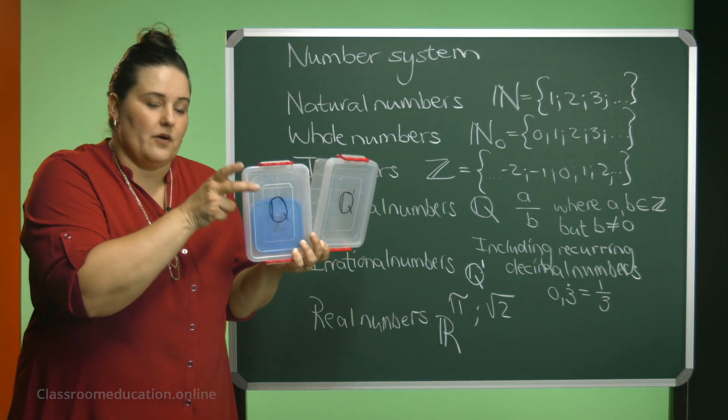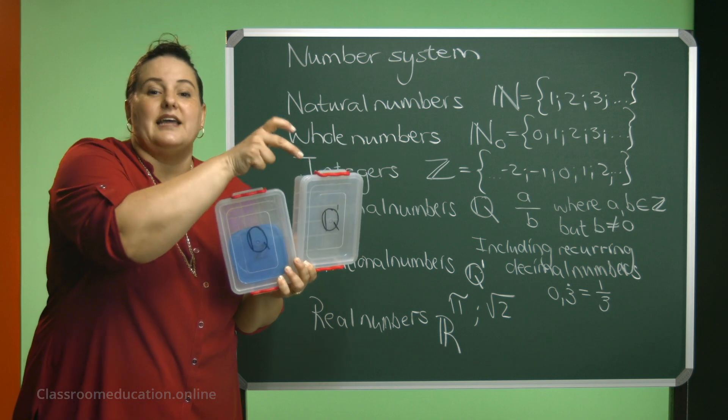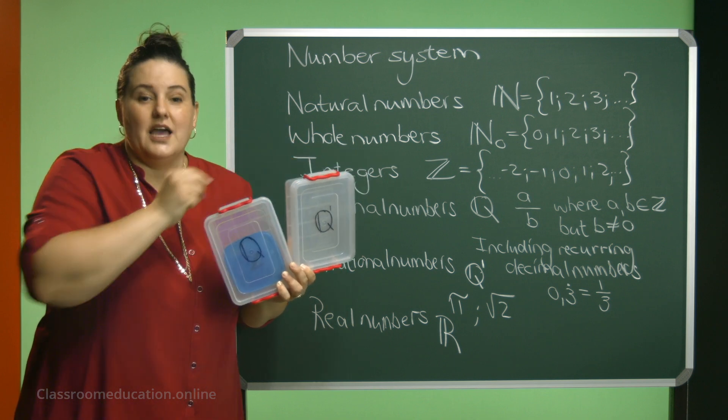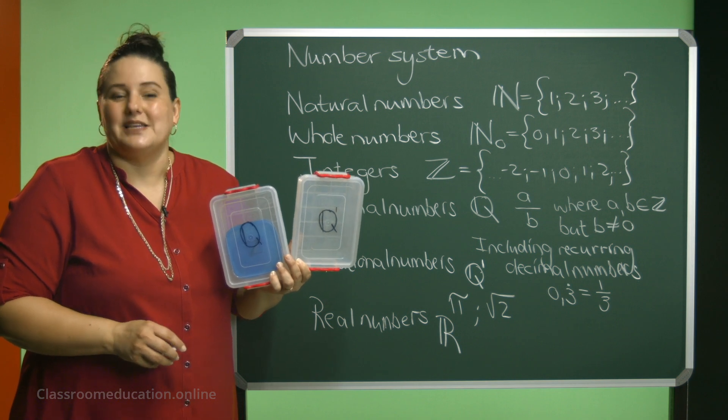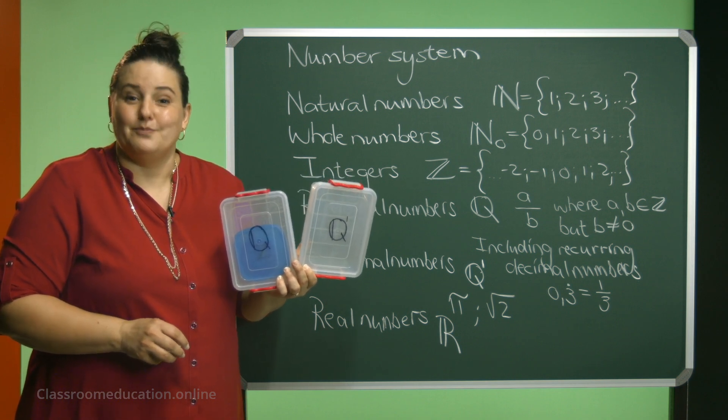Our real numbers consist of our rational numbers and our irrational numbers. I do hope that you understand our number system and that it makes sense to you. Until next time, goodbye.